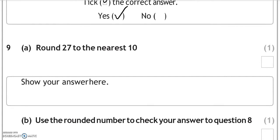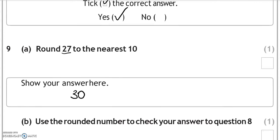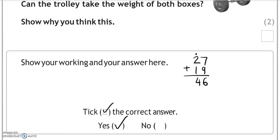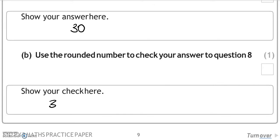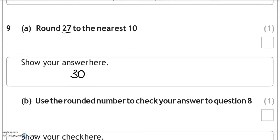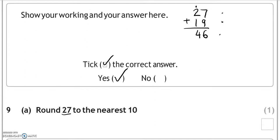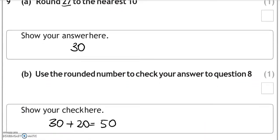Round 27 to the nearest 10. So that is between 20 and 30. 27 is closer to 30 than it is to 20, so 30 is the answer. Use the rounded number to check your answer to question 8. So that is 27 rounded to 30, 19 we're going to round it to 20. So 30 and 20 gives us 50. And 46 when you round it to the nearest 10, it's going to give you 50. So we've done the calculation correctly.